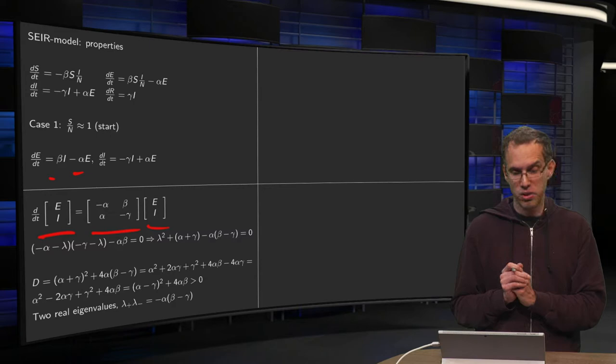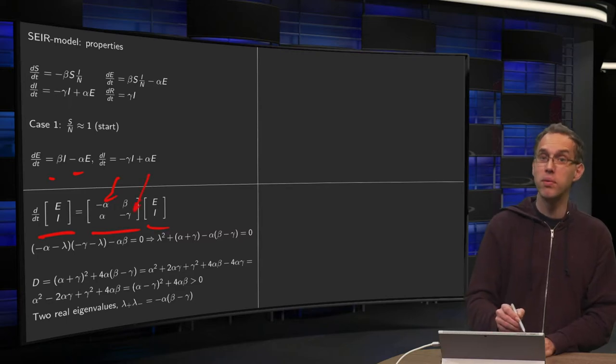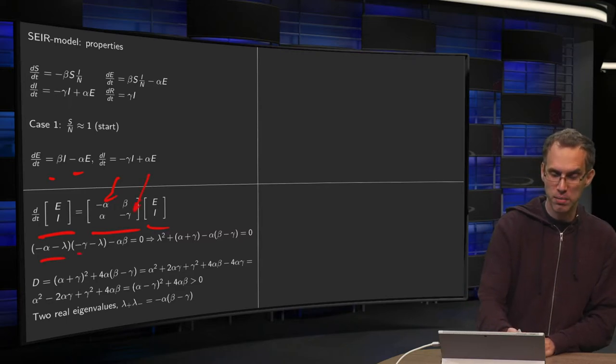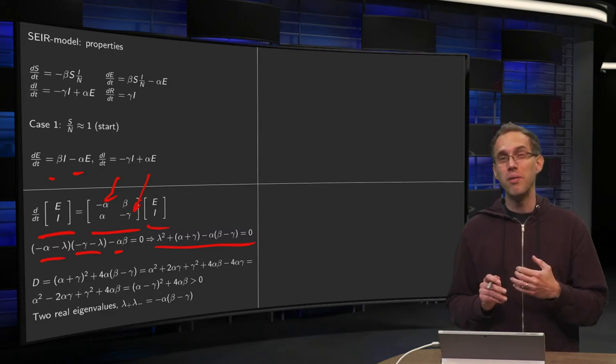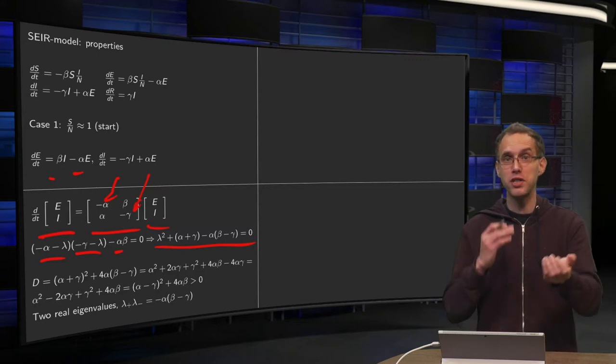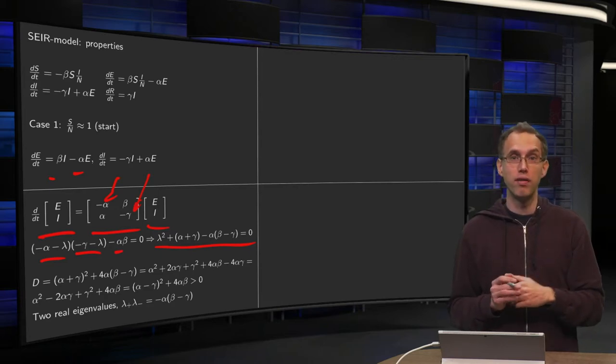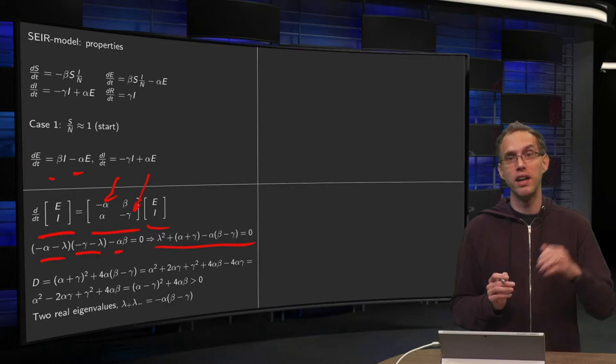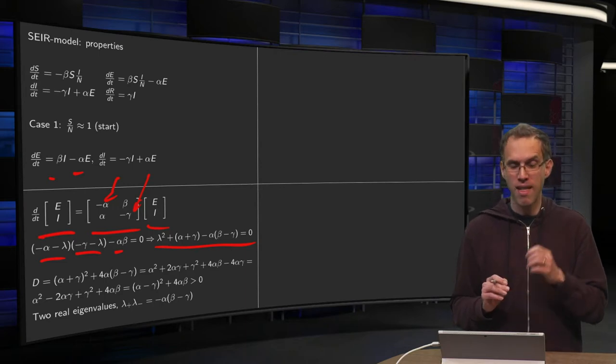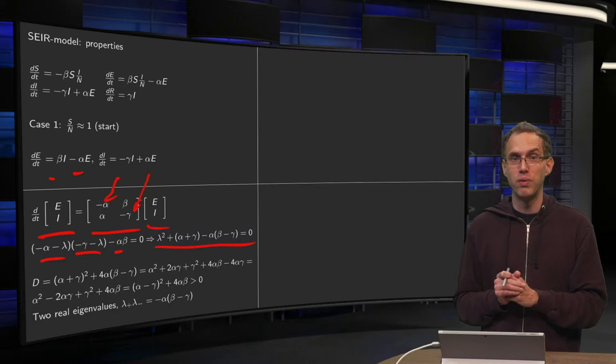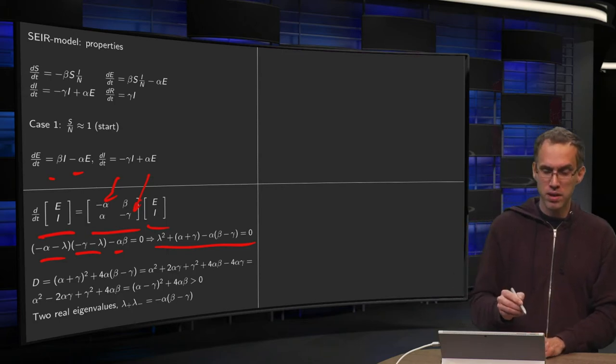So compute the eigenvalues. I put a minus lambda here and a minus lambda there. I compute determinant as usual. So you get minus alpha minus lambda times minus gamma minus lambda minus alpha beta equals zero. Now what we actually want to know is whether lambda is positive or negative. If you have positive lambda you will get exponential growth and you will get an epidemic. If all lambdas are negative then you will get exponential decay. So we are mainly interested to see whether we have positive lambdas. So let us study the lambdas. It's a bit difficult because there are parameters involved here. So compute a discriminant.